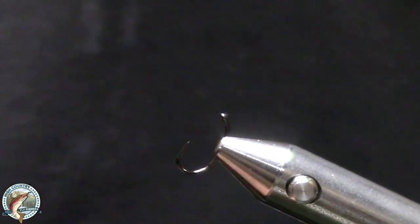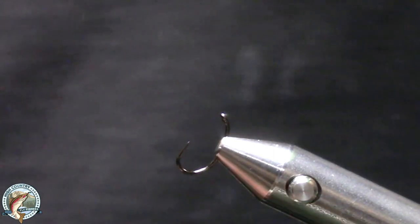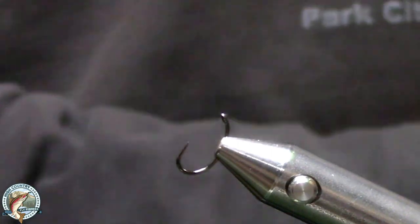Today we're going to tie nymphs, starting with one of the simplest ones going. It's called a zebra midge. Is everybody pretty good at their whip finish?